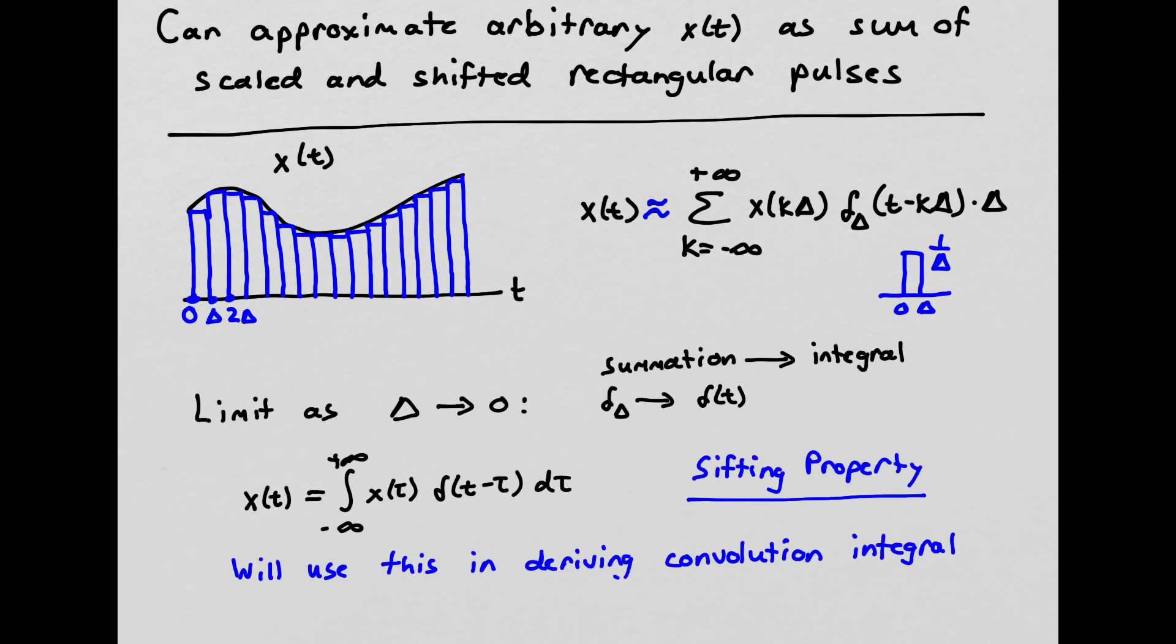So now I'm going to imagine taking, again, the limit as delta goes to 0. So if I take the limit as delta goes to 0 of this summation, the summation actually turns into an integral. And all those little rectangular pulses go to delta of T. So this summation as delta goes to 0 turns into this integral.